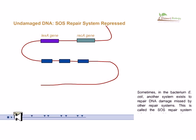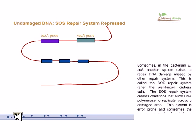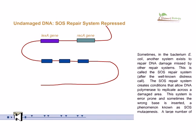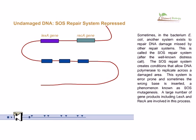Sometimes, in the bacterium E. coli, another system exists to repair DNA damage missed by earlier repair systems. This is called the SOS repair system, named after the well-known distress call. The SOS repair system creates conditions that allow DNA polymerase to replicate across a damaged area. This system is error-prone and sometimes inserts the wrong base — a phenomenon known as SOS mutagenesis.